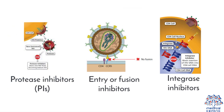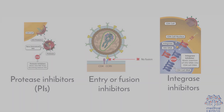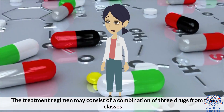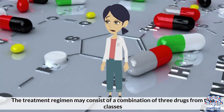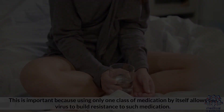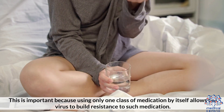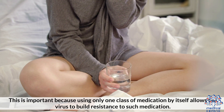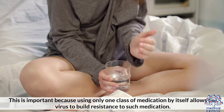Additional classes include protease inhibitors, PIs, entry or fusion inhibitors, and integrase inhibitors. These are combined in different forms according to the needs of the patient. The treatment regimen may consist of a combination of three drugs from two classes. This is important because using only one class of medication allows the virus to build resistance to that medication.